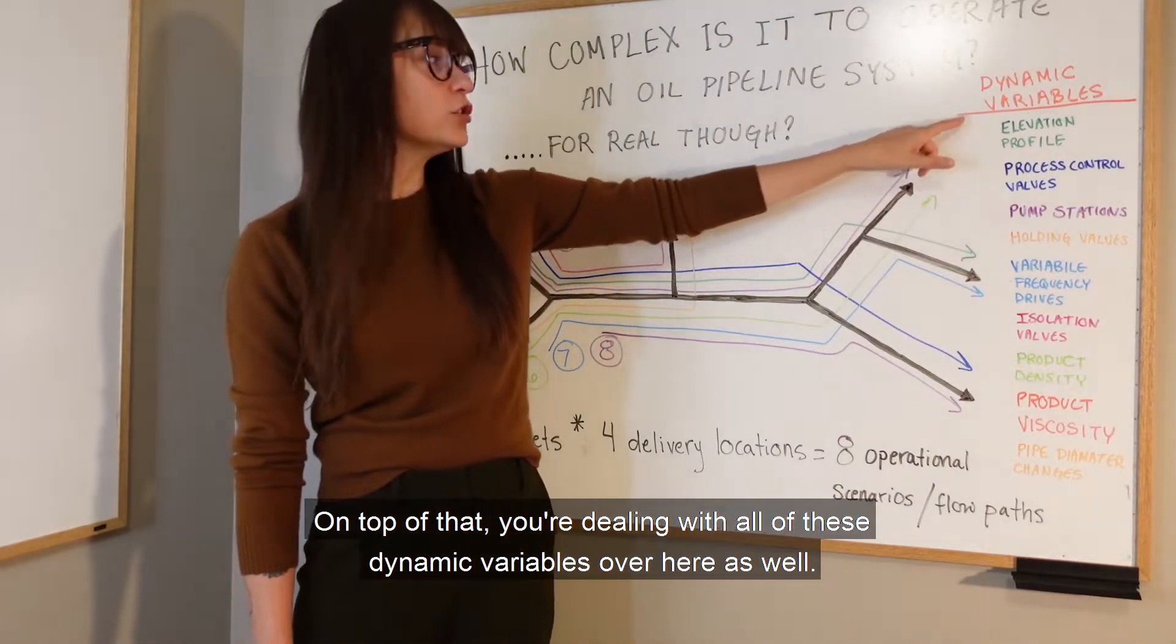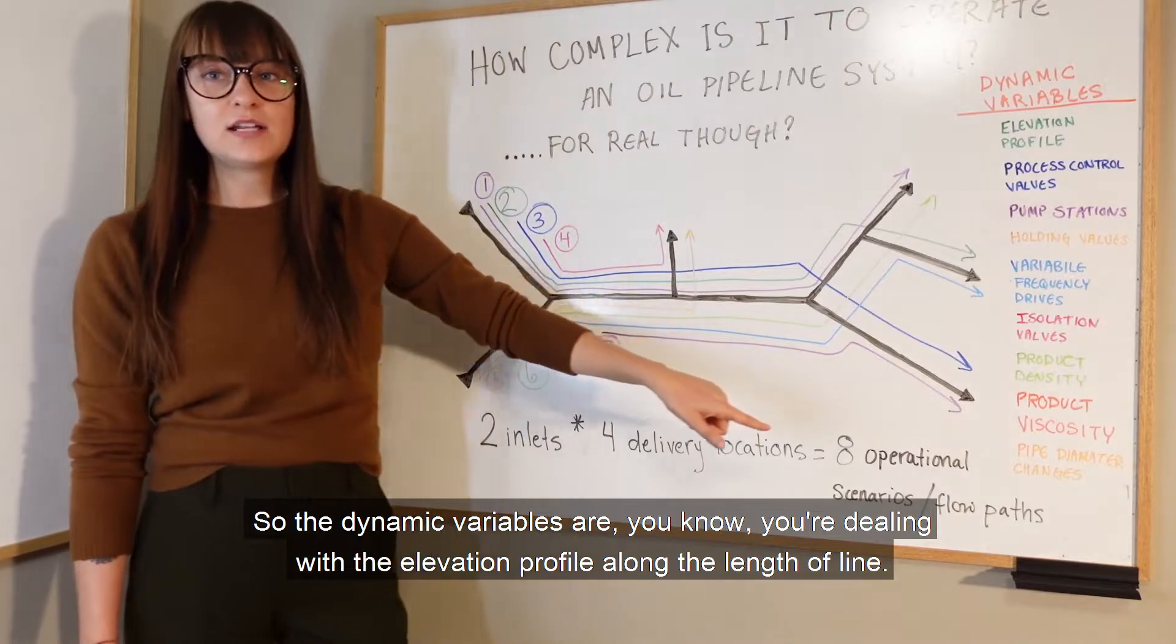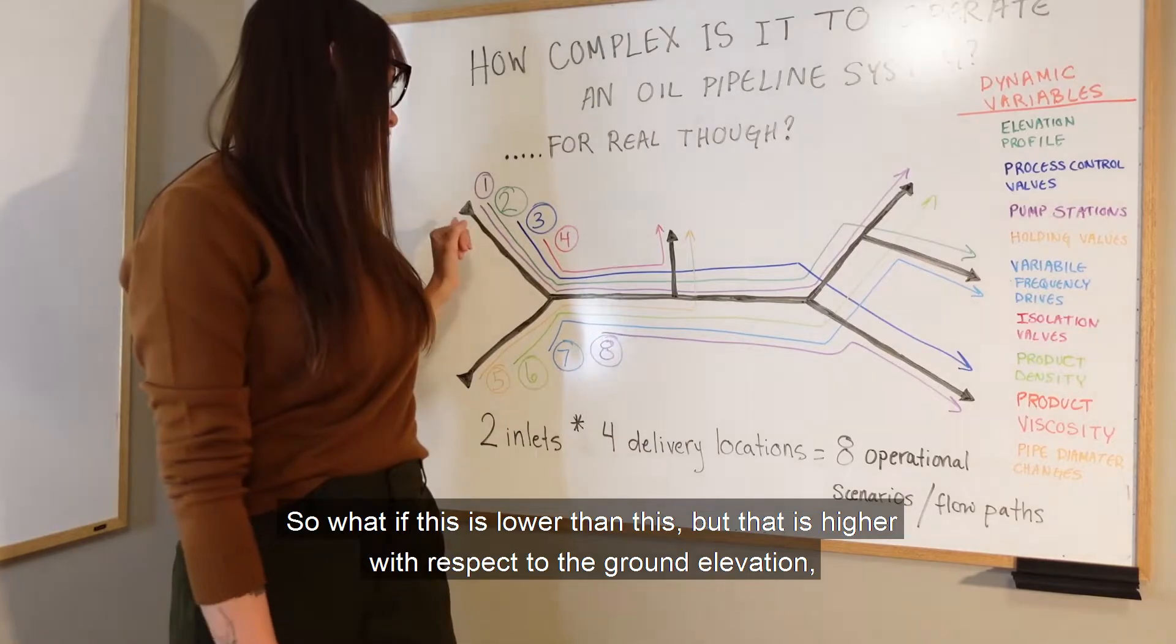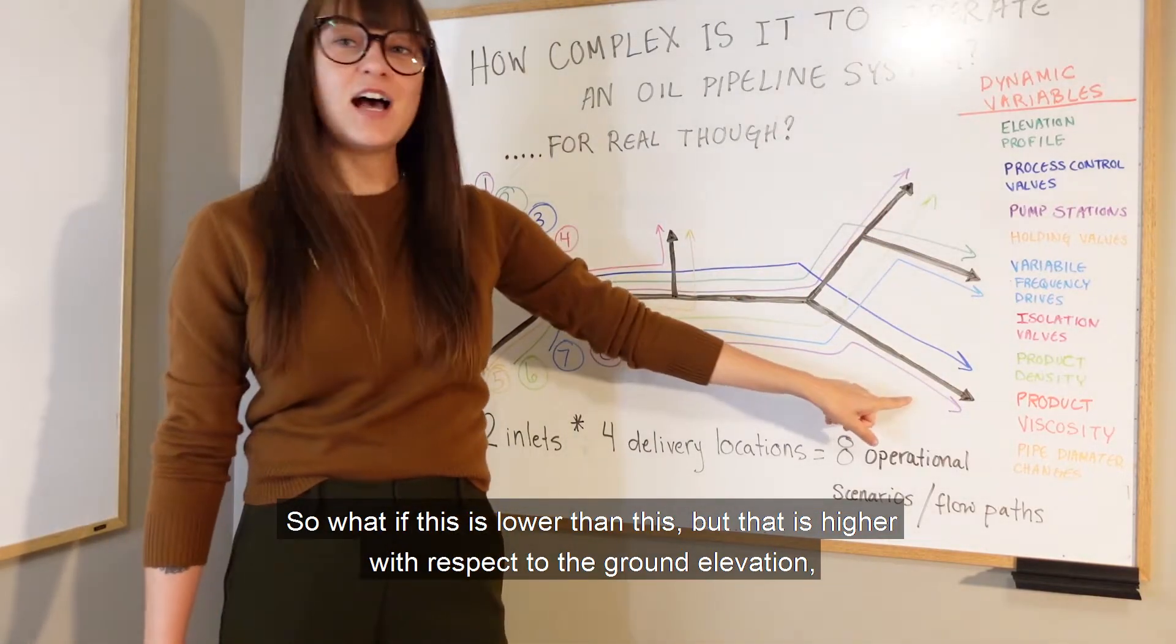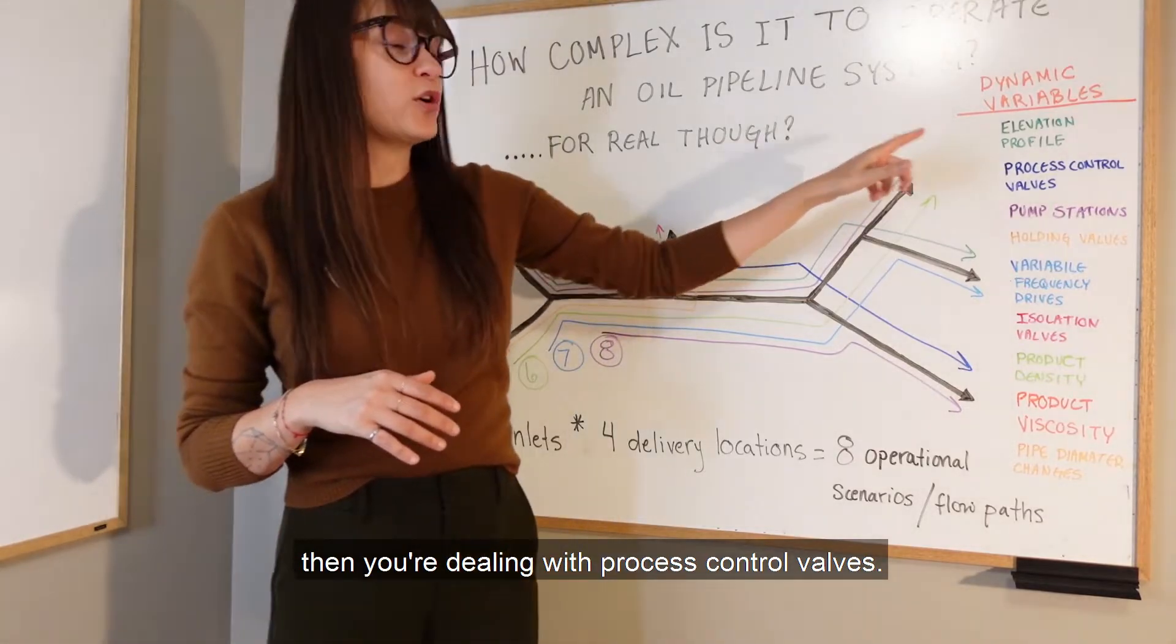On top of that, you're dealing with all of these dynamic variables as well. You're dealing with the elevation profile along the length of line. What if this is lower than this but that's higher with respect to the ground elevation?